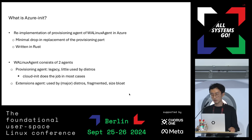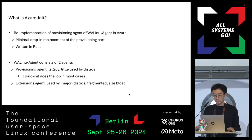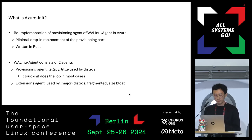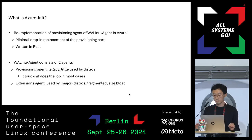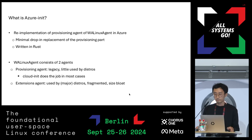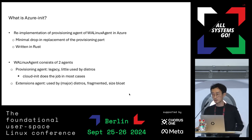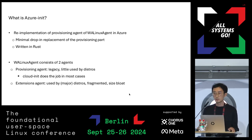WA agent consists of two different parts. The first is the provisioning agent, and the second is the extensions agent. The provisioning agent has been there for a long time, and at this point it's legacy, very little used by most distros. In most cases, Cloud Init does the job. Other tools like Ignition exist, however Cloud Init is dominant in the market.